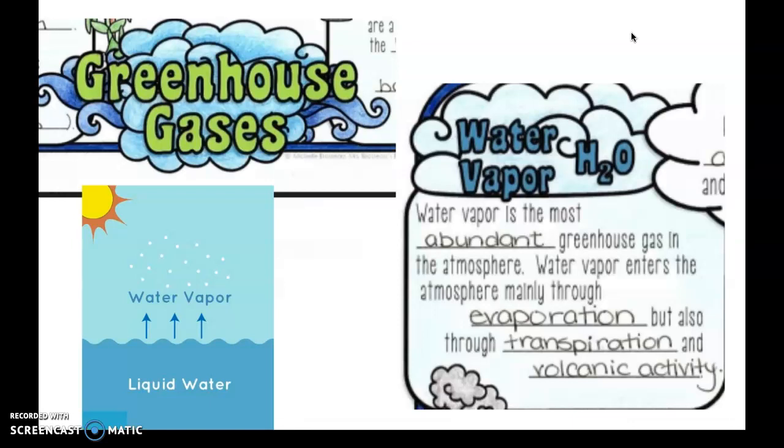The very first one, which surprises most people, is water vapor. That's why we said when we were going through the different air pollutants, water vapor is actually an example of an air pollutant because it is a greenhouse gas. Water vapor is the most abundant greenhouse gas in the atmosphere. Water vapor enters the atmosphere mainly through evaporation, or what you see on the left-hand side of your screen, going from a liquid to a gas, but it can also happen through transpiration and volcanic activity. Water vapor is one of those molecules that traps the heat, that bounces that radiation back to the Earth instead of out to space.